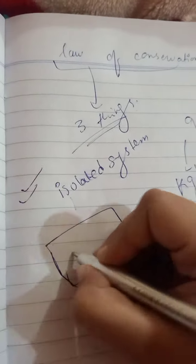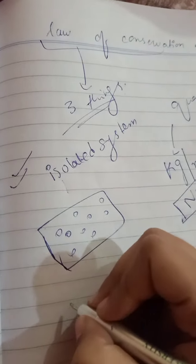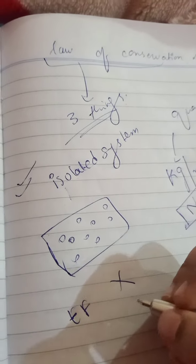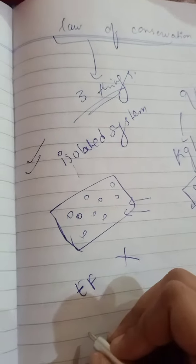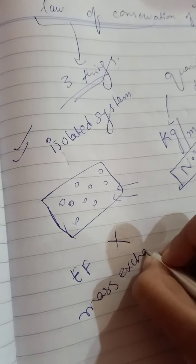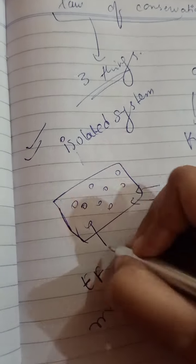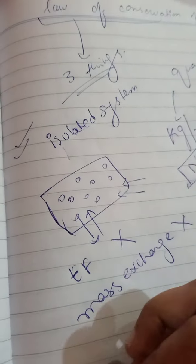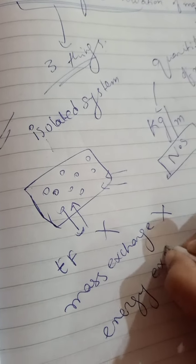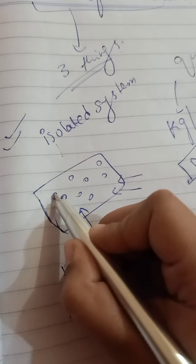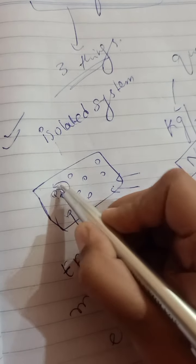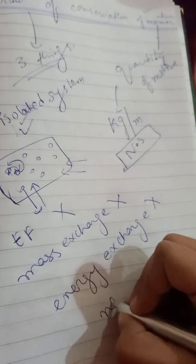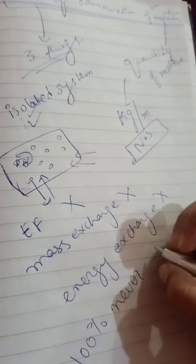For example, consider a container where gas molecules are present. An isolated system is one where external force cannot be applied, mass cannot be exchanged — meaning mass will not be moving outward or coming inside — and energy cannot be exchanged between molecules. This kind of system is called an isolated system. As we know, a hundred percent isolated system never exists.